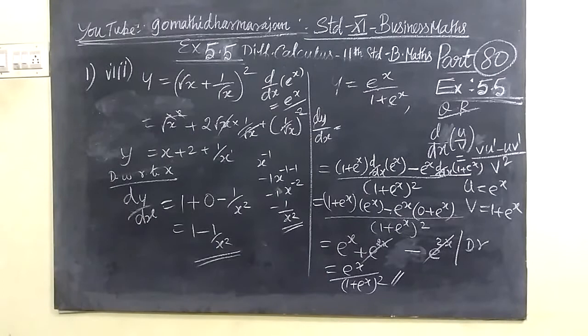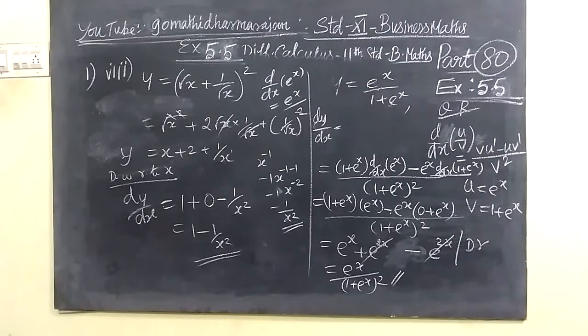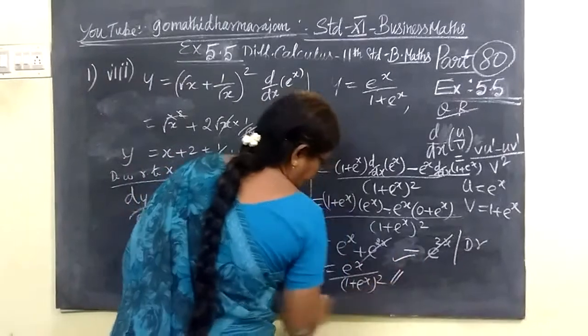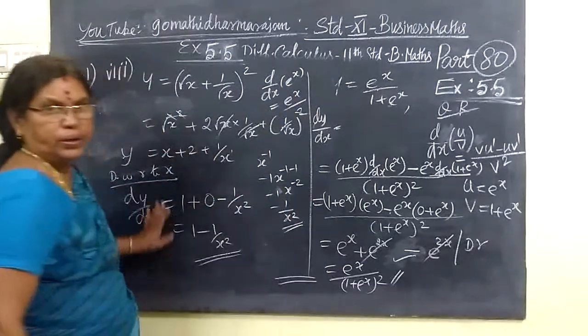Let me see the answer for this. 1 by 1 plus e power x whole square, yes, times e power x. So this one is the correct answer. So basically the next one is the next one. Thank you.